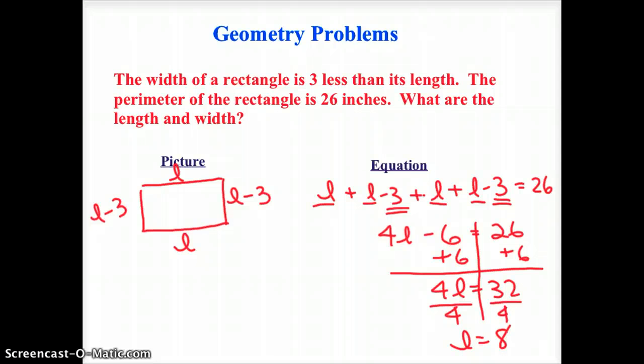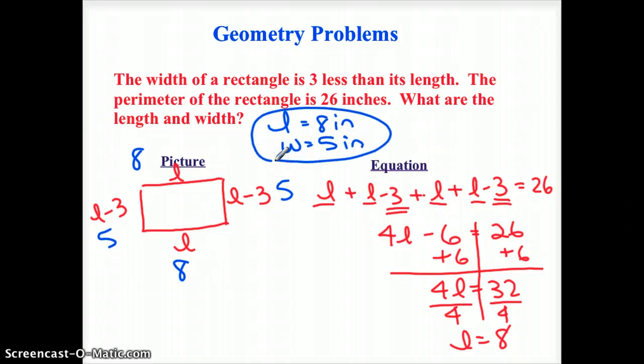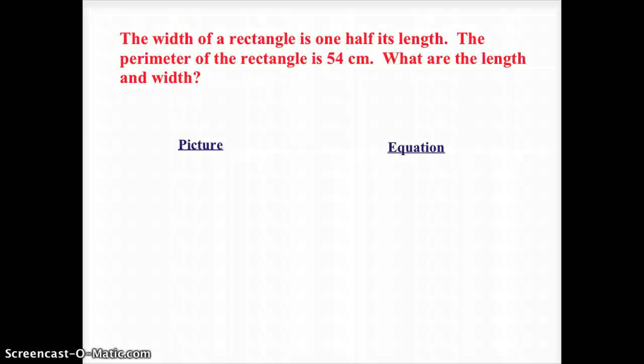Notice I'm not done with my problem, I just have what L equals. So L is eight, that means L minus three seems to be five, and it would be good to double check that eight plus five plus eight plus five really does equal 26. So this asks the length and the width. I'm going to say the length equals eight inches, and the width equals five inches. And it does seem like I have it right.